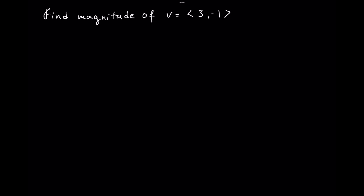In this video we will find the magnitude of vector V = (3, -1). To find the magnitude, we use the formula: square root of the x-element squared plus the y-element squared, so square root of 3 squared plus negative 1 squared.